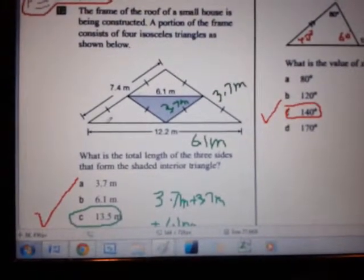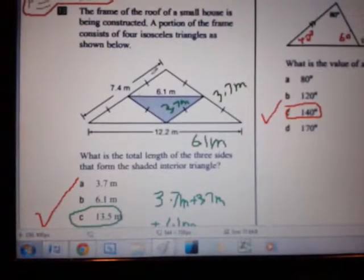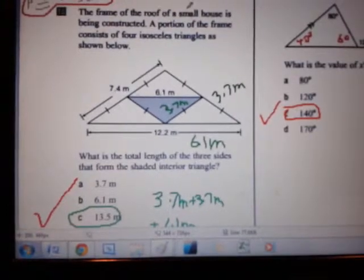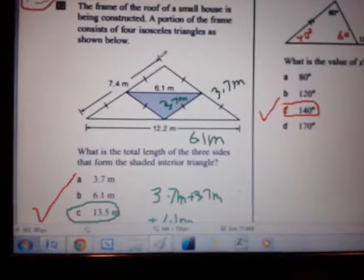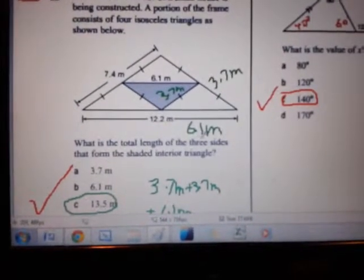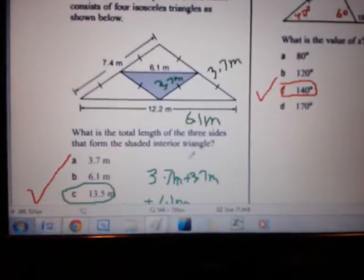For question 18, the frame of the roof of a small house is being constructed. A portion of the frame consists of four isosceles triangles, as shown below. What is the total length of the three sides that form the shaded interior triangle?